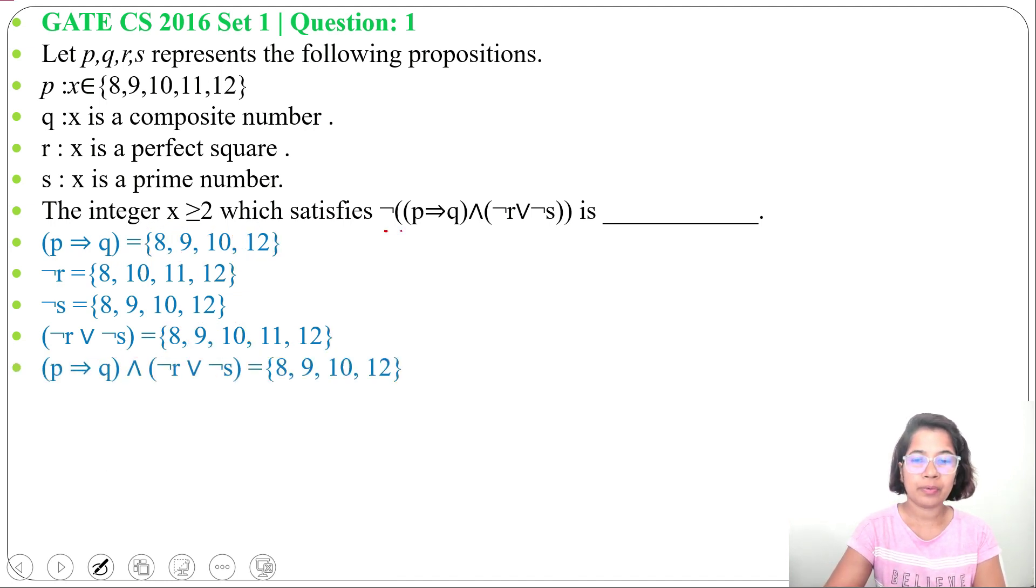Next we need to find the negation of this whole expression. So the negation of {8,9,10,12} is {11}. The only number left is 11. So the answer will be 11.